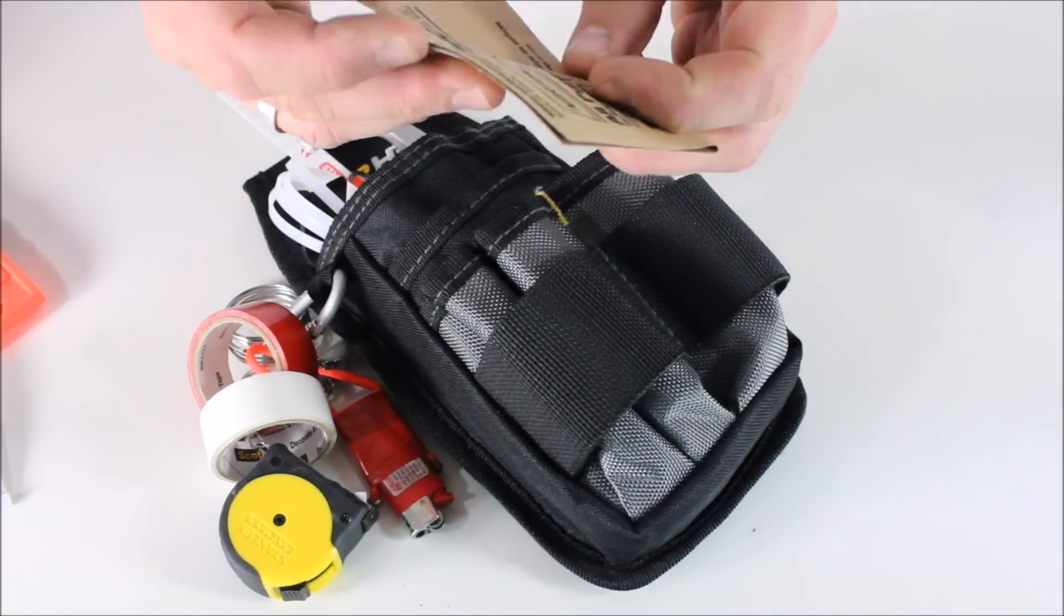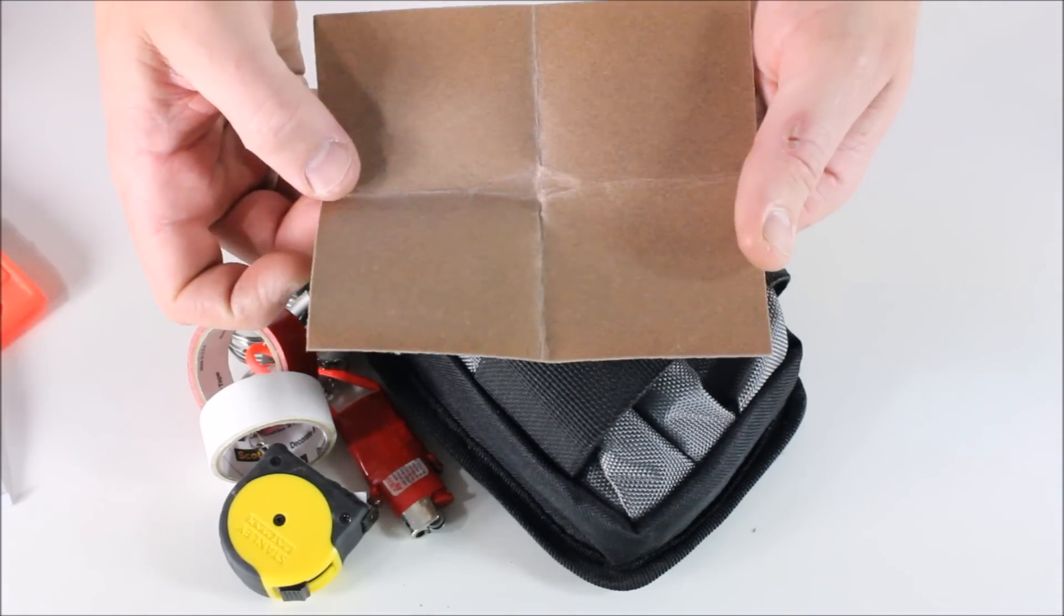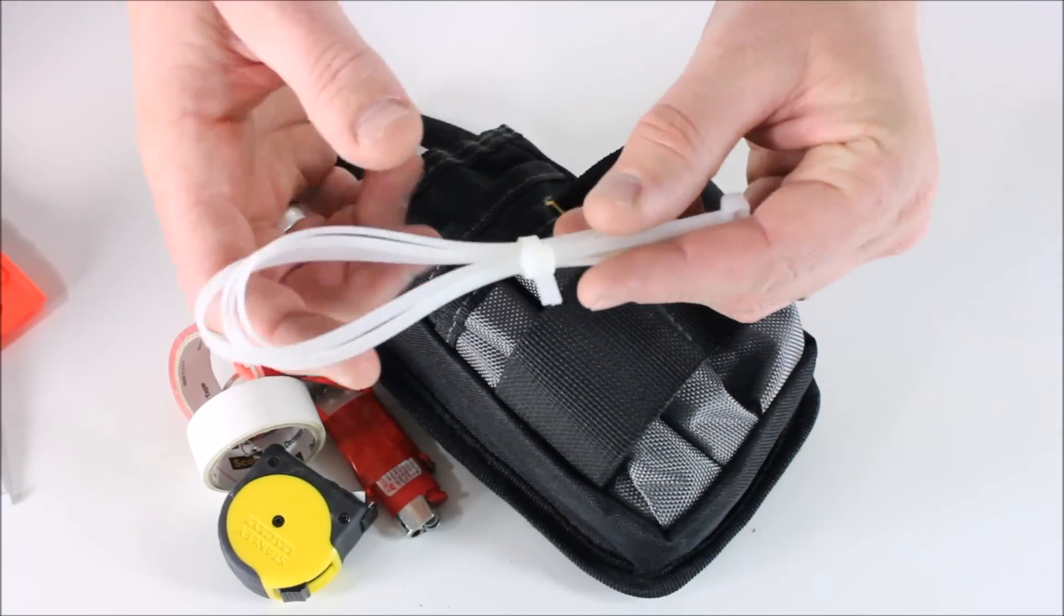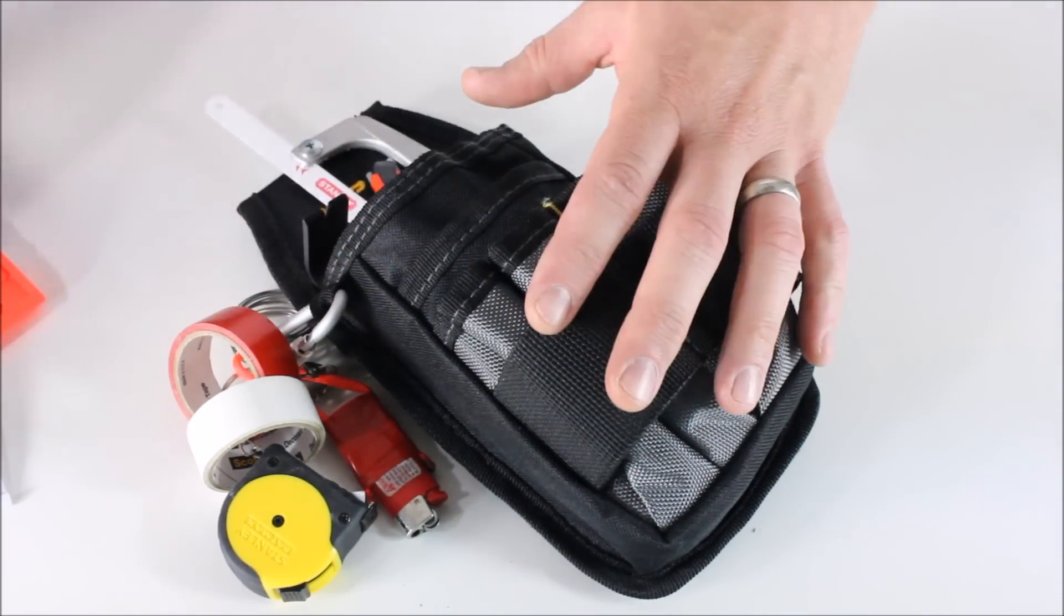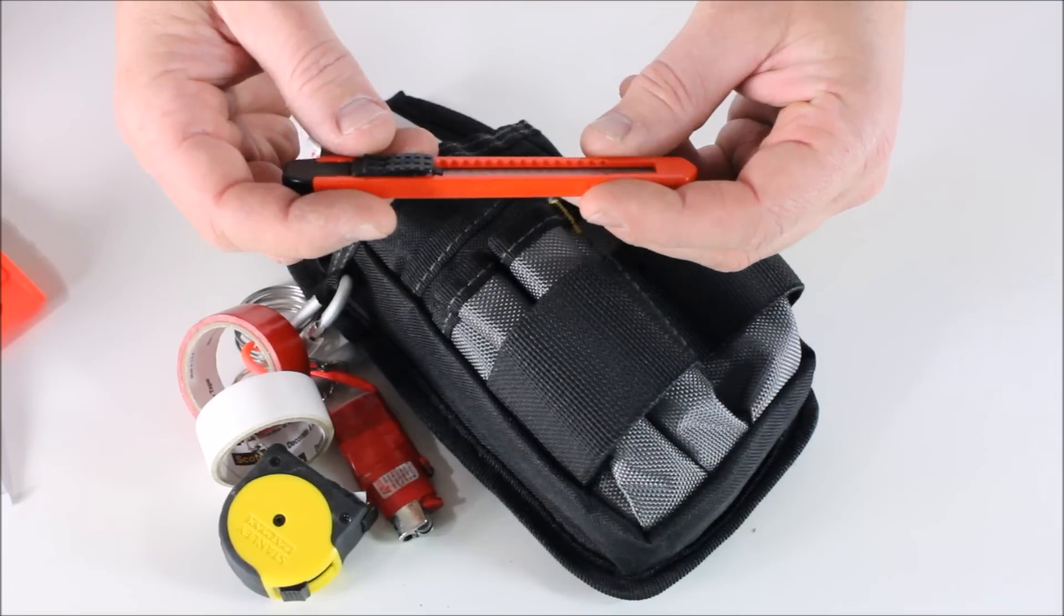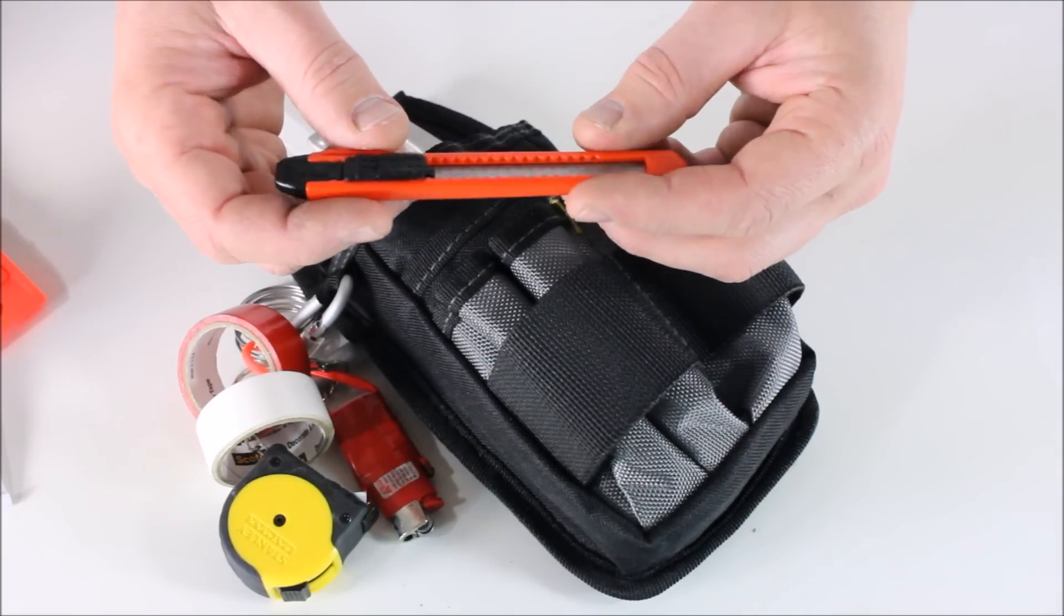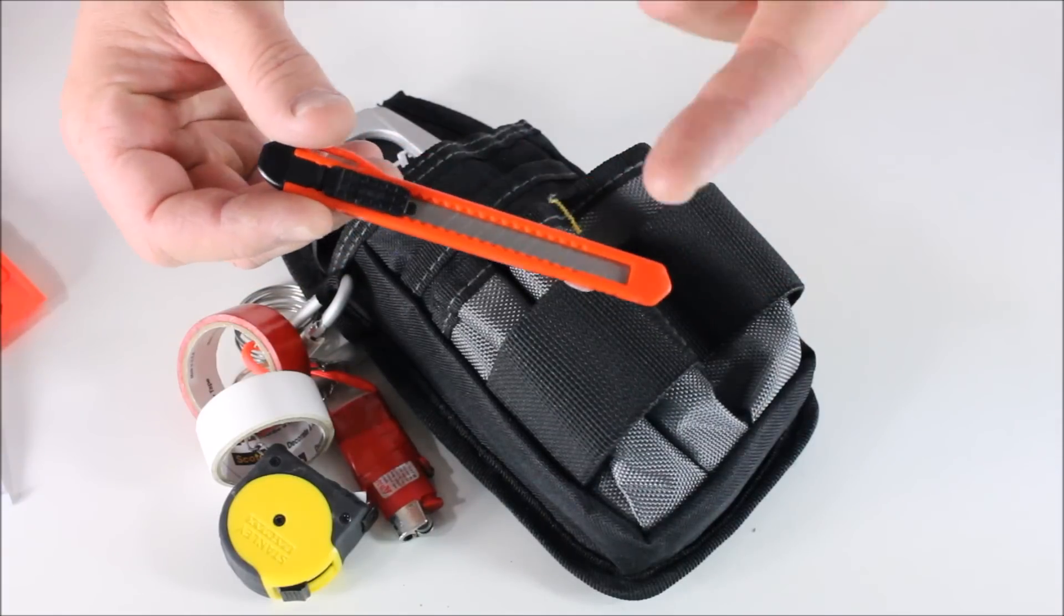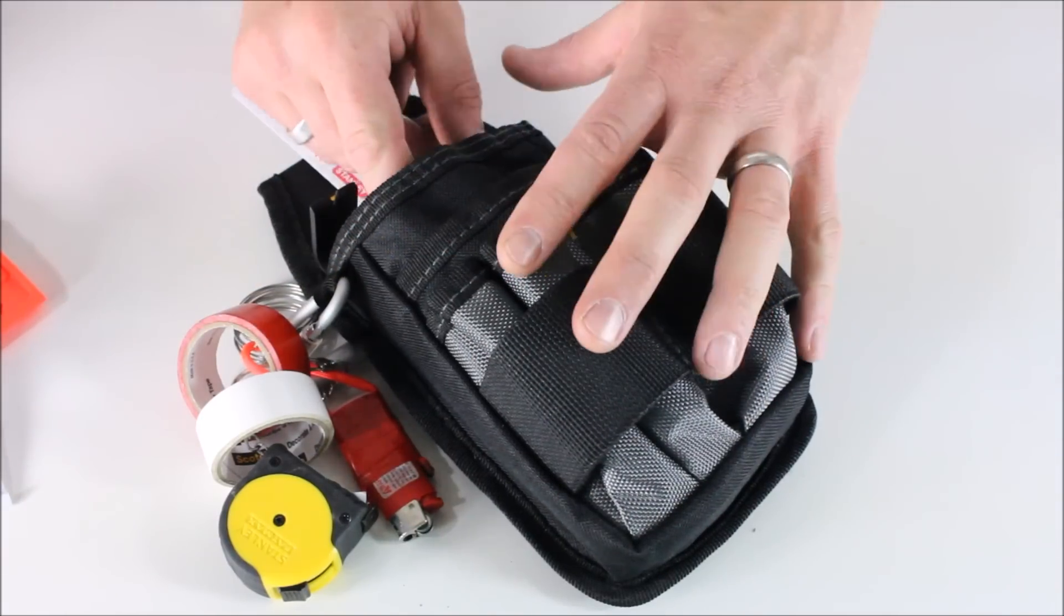Got some 150 grit sandpaper. Some zip ties. I just doubled them over and put a zip tie around them to keep them under control. A very simple razor blade. So again, I got this at Harbor Freight for, I think, 99 cents. But now you have a very simple cutting tool in your kit.